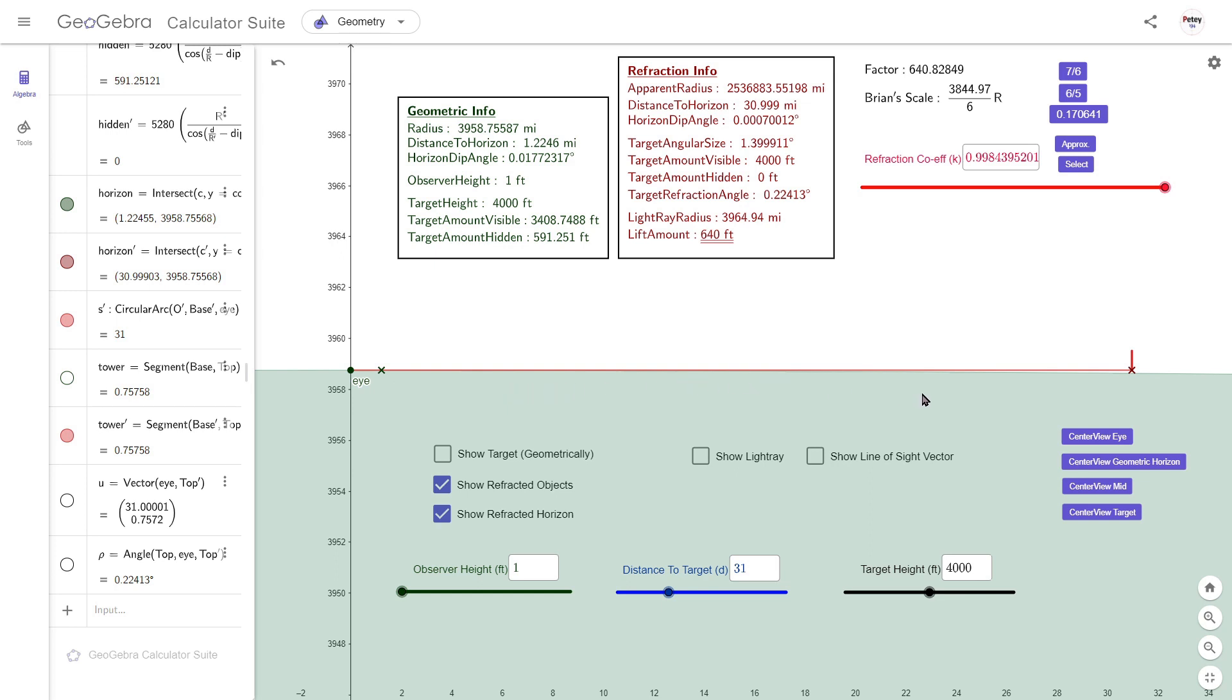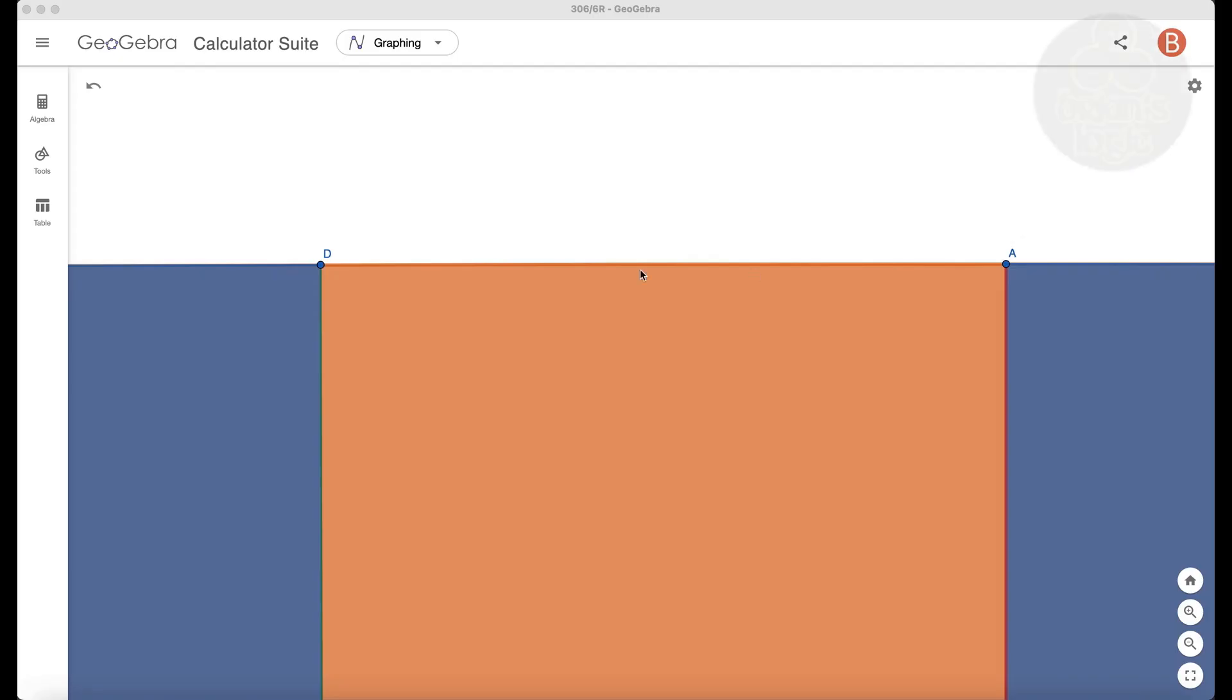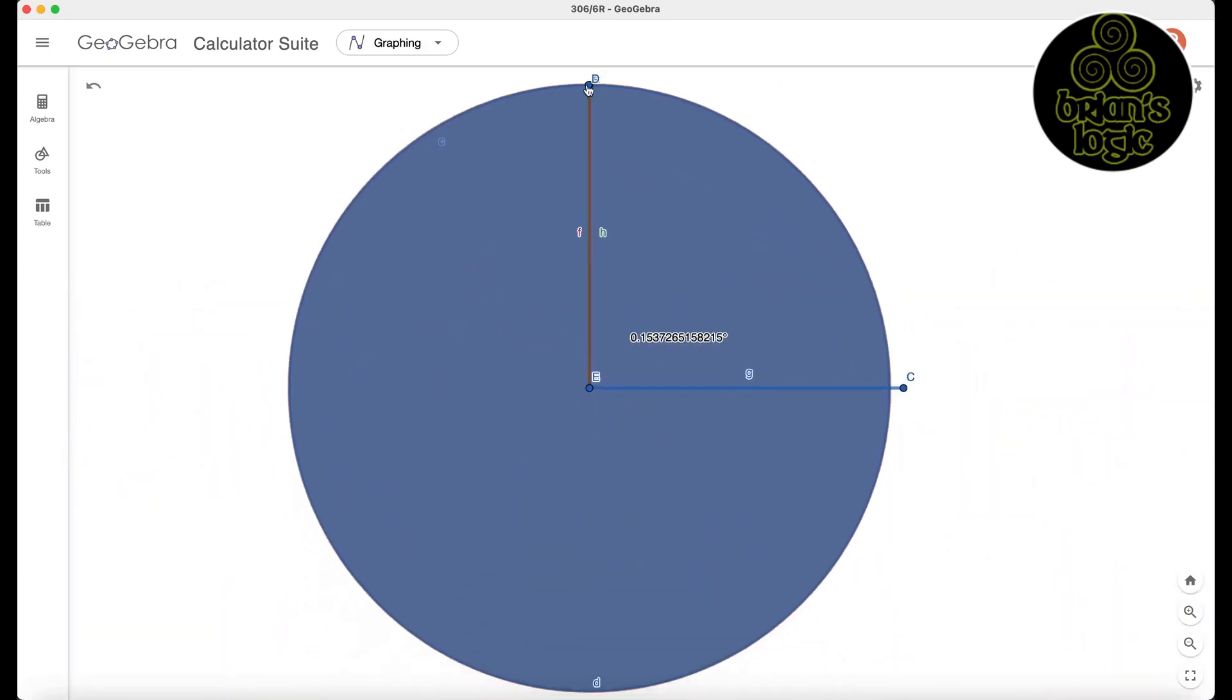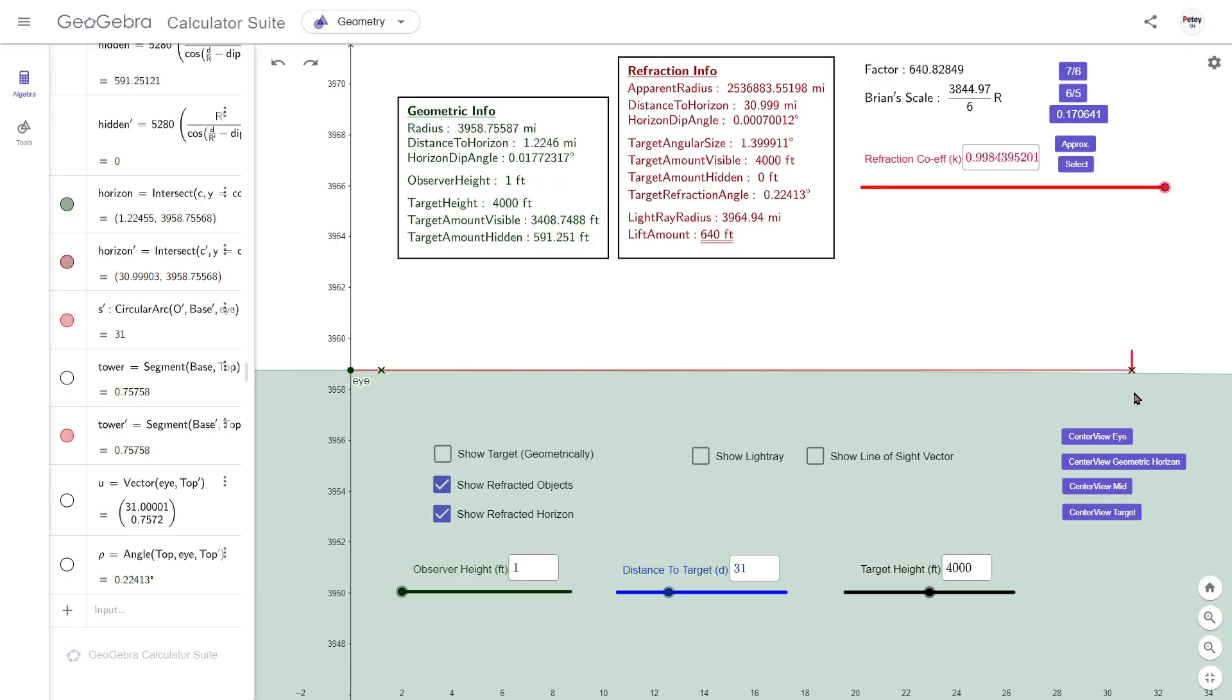But according to Brian, Globers want you to believe this. That's supposed to be just under 25,000 miles. This is what it becomes. Their globe is up in here as a tiny outline. By placing the observer's refracted horizon at 31 miles.